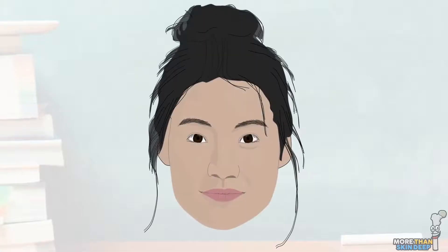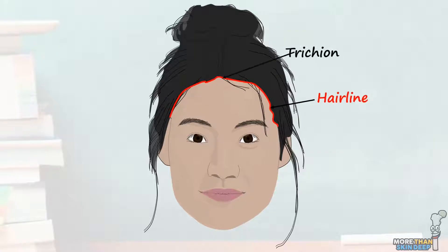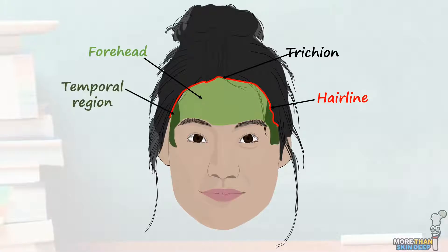Let's start by generating an overview of the regions of the face before we delve deeper. The most superior part of the face, bounded along its upper border by the hairline and in the middle by the trichion, is the forehead, sometimes called the frontal region. You may also see the temporal regions labelled either side of the forehead.